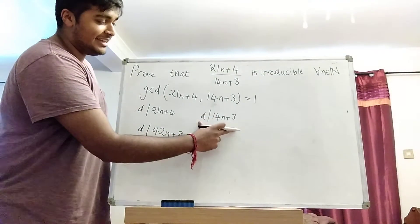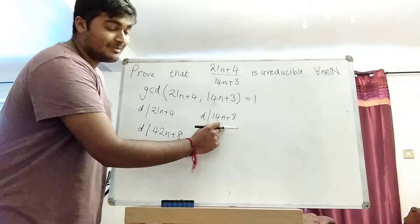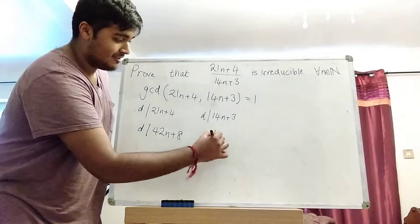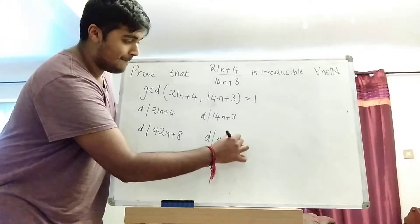Okay, and I can apply a similar argument here. If D divides this number, then certainly it divides 3 times this number. So D divides 42n plus 9.